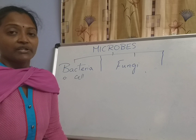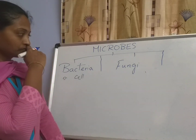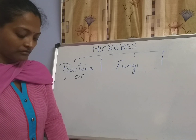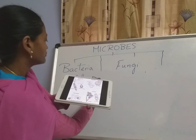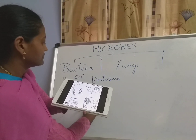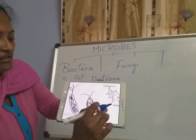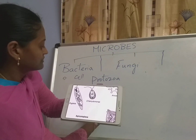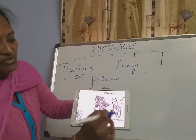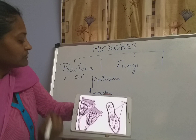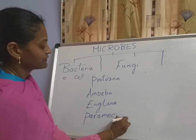Fungus starts growing whenever suitable conditions are there — it starts growing on dead matter. Now the next picture is protozoa. Examples I mentioned — one is amoeba. Amoeba is in different shapes. Another one is euglena, which has a cell and a tail. And paramecium, which I said is in slipper shape. These are all protozoa.